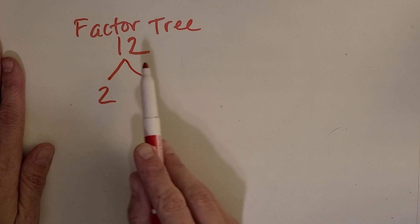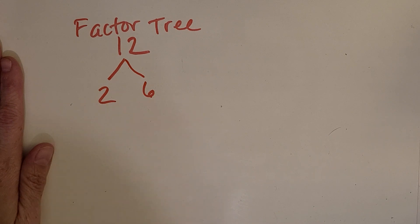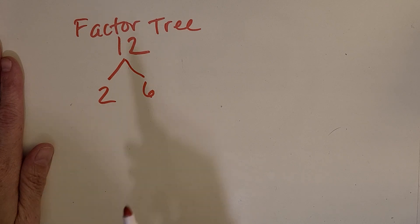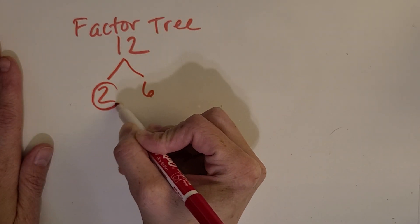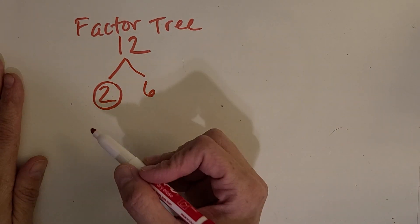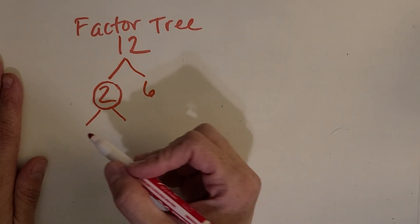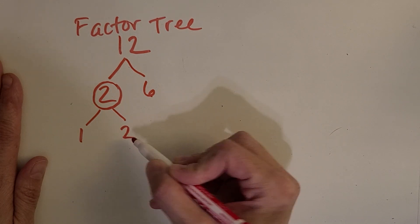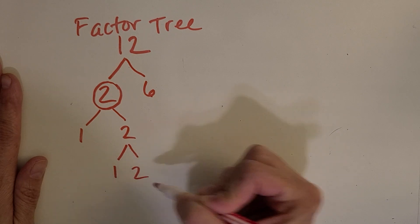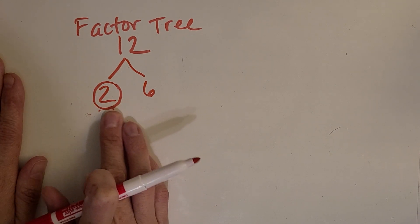Now I start thinking about which of my factors are prime and which are composite. What is two? It's prime. When I see a prime number, I circle it, because we really don't need to break that number apart anymore. If it's prime, it can only be broken up into one and itself, and we don't want to keep going forever. So we stop with prime numbers and stop that branch.